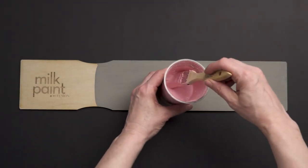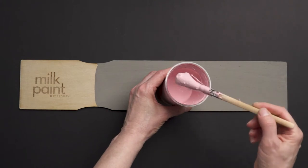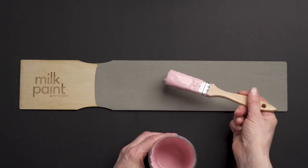Achieving a crackled finish with milk paint is so easy and authentic looking. All you have to do is mix your milk paint a little thicker and fast dry it with a hairdryer. Let's get started.